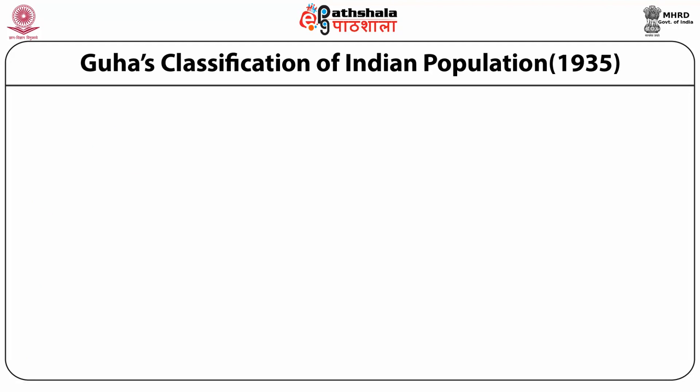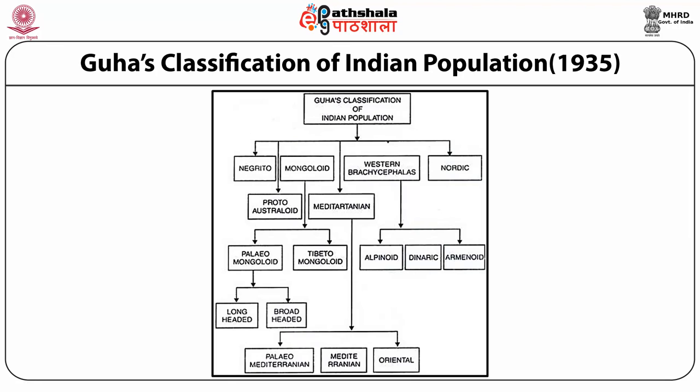You can see the diagram where Guha classified the Indian population into different categories: first Negrito, second Proto-Australoid, third Paleo-Mongoloid, then Mediterranean, Western Brachycephalic and Nordic. The Mongoloids have subtypes: Paleo-Mongoloid and Tibeto-Mongoloid. The Mediterraneans are also subdivided into Paleo-Mediterranean and Mediterranean. The Western Brachycephalics are divided into three subtypes: Alpinoid, Dinaric and Armenoid.